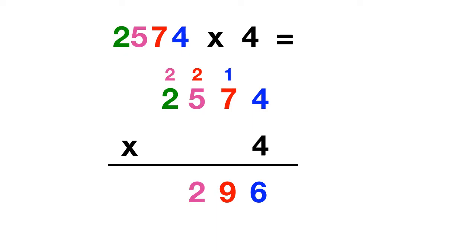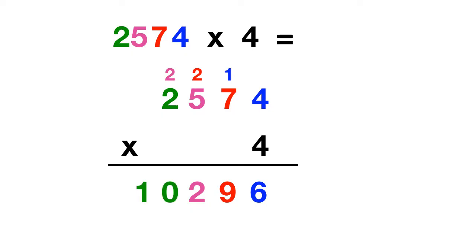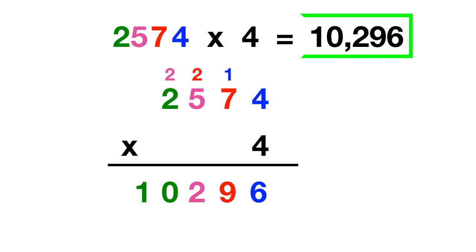Finally we multiply 4 times 2 thousands, and then we add in the 2 that are regrouped. Well, 4 times 2 is 8, plus the 2 that are regrouped gives us 10. So 2574 times 4 equals 10296.